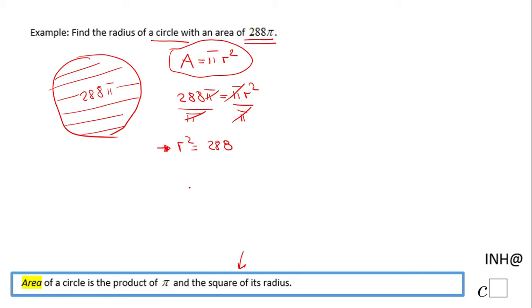How do we find r? For finding r we're going to use the inverse operation of raising to the second power, which is taking square root. Square root of 288. And we don't need to put plus and minus because this is a problem in geometry, the radius will always be positive. So this is the answer in radical form.